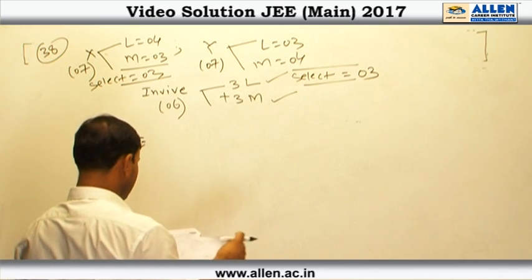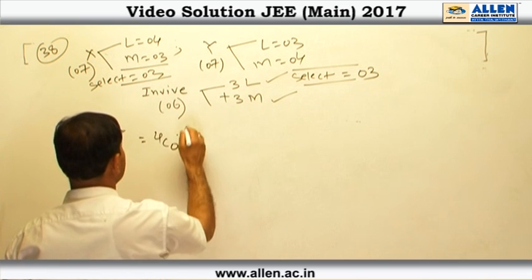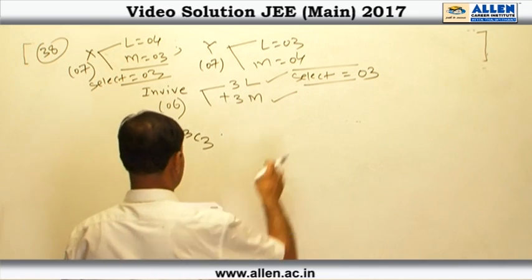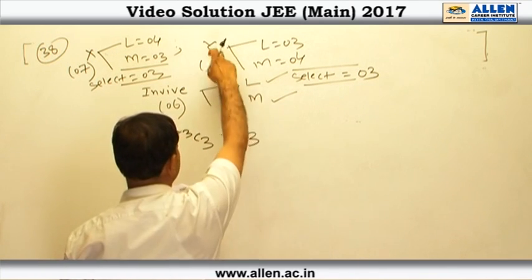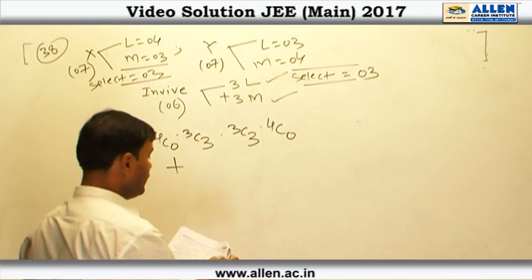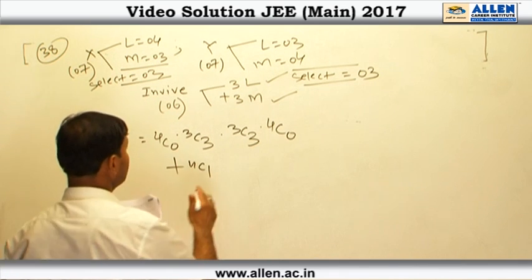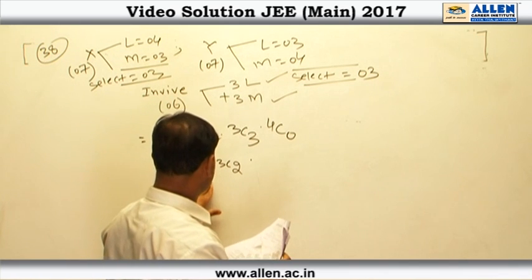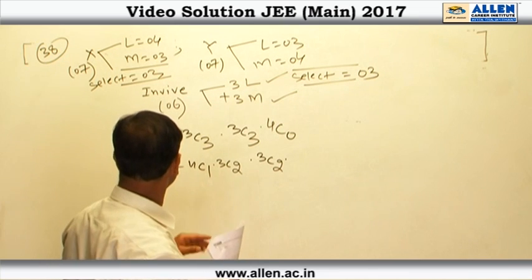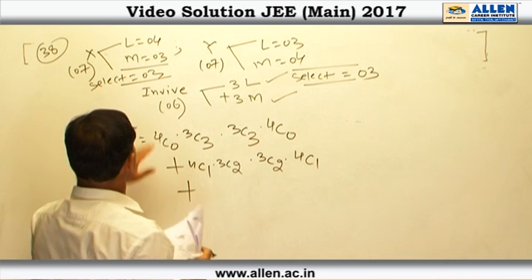We find different possibilities. Possibility 1: select no ladies from Mr. X's friends — take all 3 men from X, then take all 3 ladies from Y and no men from Y. Possibility 2: take 1 lady from X's friends (4C1 ways) and 2 men from X (3C2 ways). Since only 1 lady is from X, we need 2 more from Y's 3 ladies (3C2 ways), and since 2 men are from X, we need 1 more man from Y's 4 men (4C1 ways).